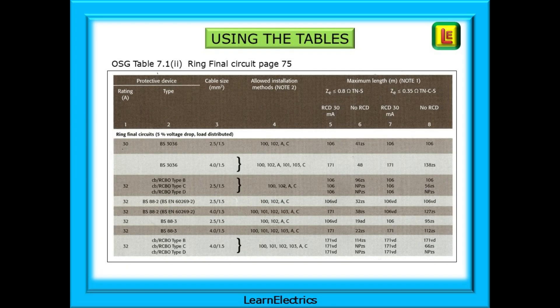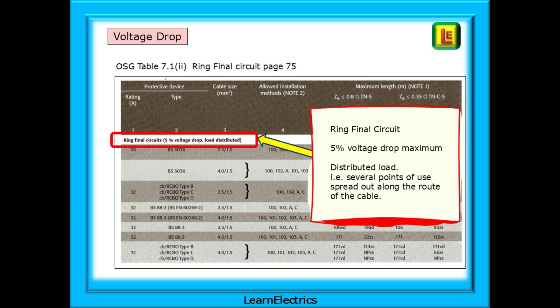Back to Part 7 of the On-Site Guide. We've chosen a 32-amp ring final circuit for this example, so go to Table 7.1.2 on page 75. The table is full of choices. Find the section headed Ring Final Circuits towards the top of page 75. It reminds us that the voltage drop is 5% maximum, which is 11.5 volts for a 230-volt single-phase circuit, and a distributed load - that is to say, several points of use spread out along the route of the cable. The load isn't all bunched up at the end of the circuit.